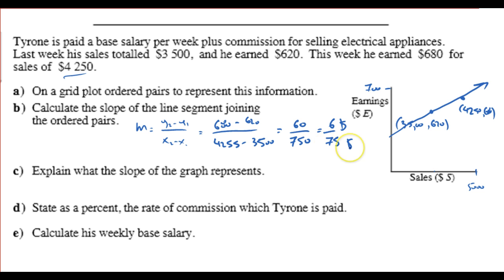We can interpret this here. That's part C. Let me do it where it's supposed to be done here. Explain what the slope of the graph represents. For every $75 that he sells, he keeps $6. He keeps $6.